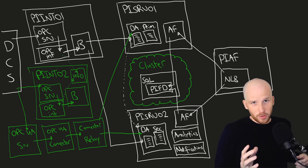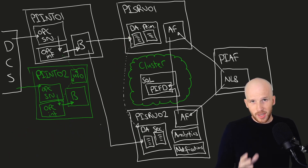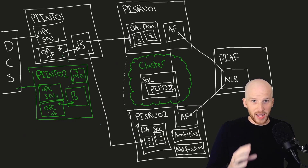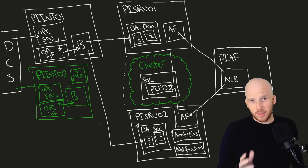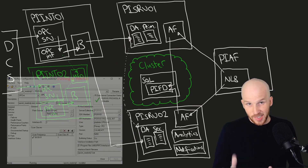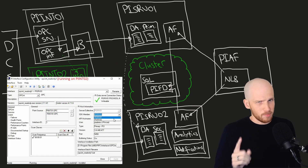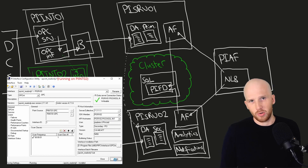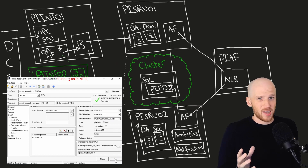We covered UniInt Failover in the Basics class, but this is how it interacts with PyData Archive collectives. If we were to add another interface machine to our infrastructure, let's call it PyInt02. The setup would be exactly the same as in the Basics class, except one very small difference. In the ICU under the PyHost information, we'd set the SDK member to PySIV02. This makes the interface pair slightly more robust if there's an outage.